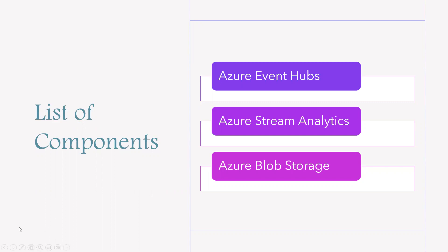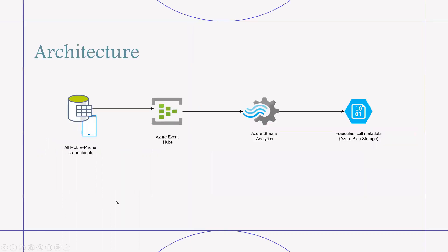Let me move to the architecture — how to design it. We know the three components we need: Azure Event Hubs, Stream Analytics, and Blob Storage. Our data source will be mobile and phone call metadata. I will discuss the entire data flow step by step.